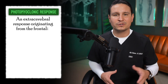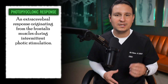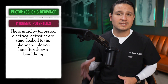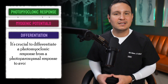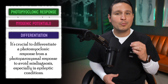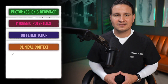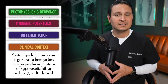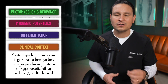To summarize, here are the important parts to remember. Photomyoclonic response: an extracerebral response originating from the frontalis muscles during intermittent photic stimulation. Myogenic potentials: these muscle-generated electrical activities are time-locked to the photic stimulation but often show a brief delay. Differentiation: it's crucial to differentiate a photomyoclonic response from a photoparoxysmal response to avoid misdiagnosis, especially in epileptic conditions. Clinical context: although generally benign, the photomyoclonic response can be more pronounced in states of hyperexcitability or during withdrawal, offering potential insights into a patient's neurological status.